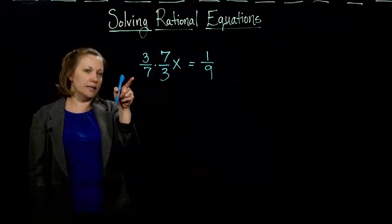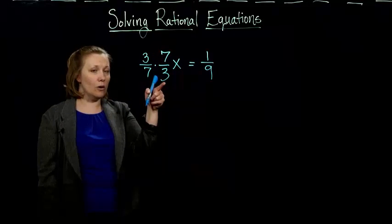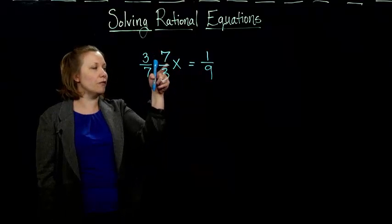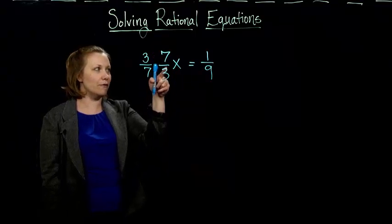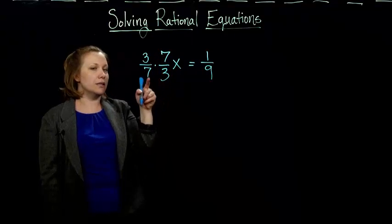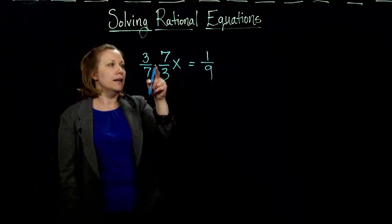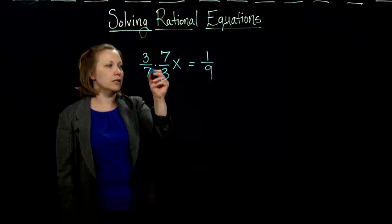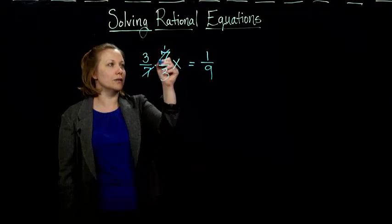The fancy name for this is called the reciprocal of 7/3. We flipped it. We took what was in the bottom of the fraction, put it in the top, and what was in the top of the fraction and put it in the bottom. And this cancels everything out. Sometimes you'll see people do this.